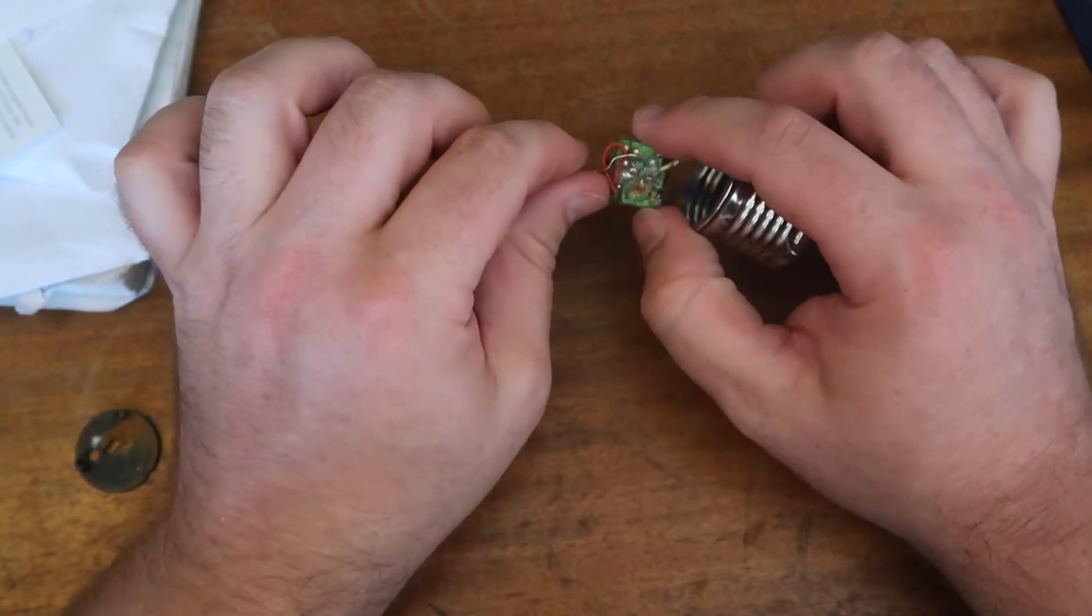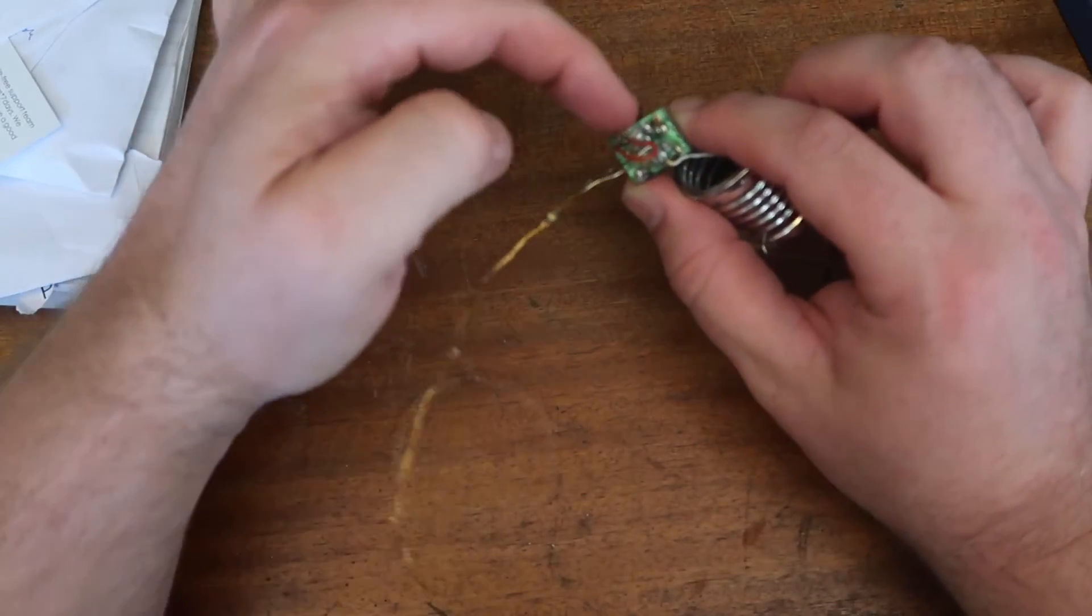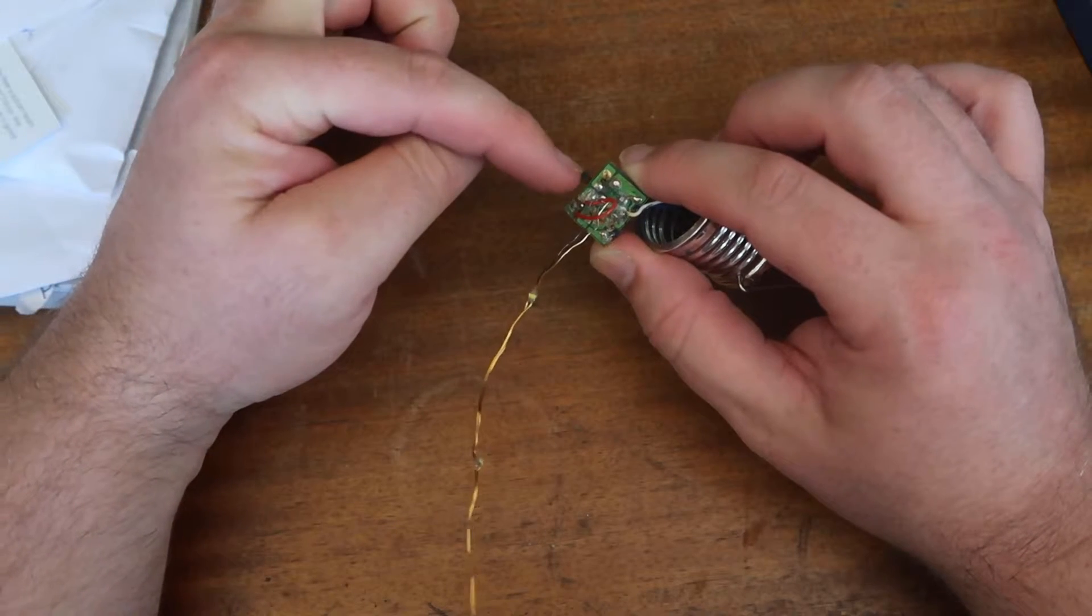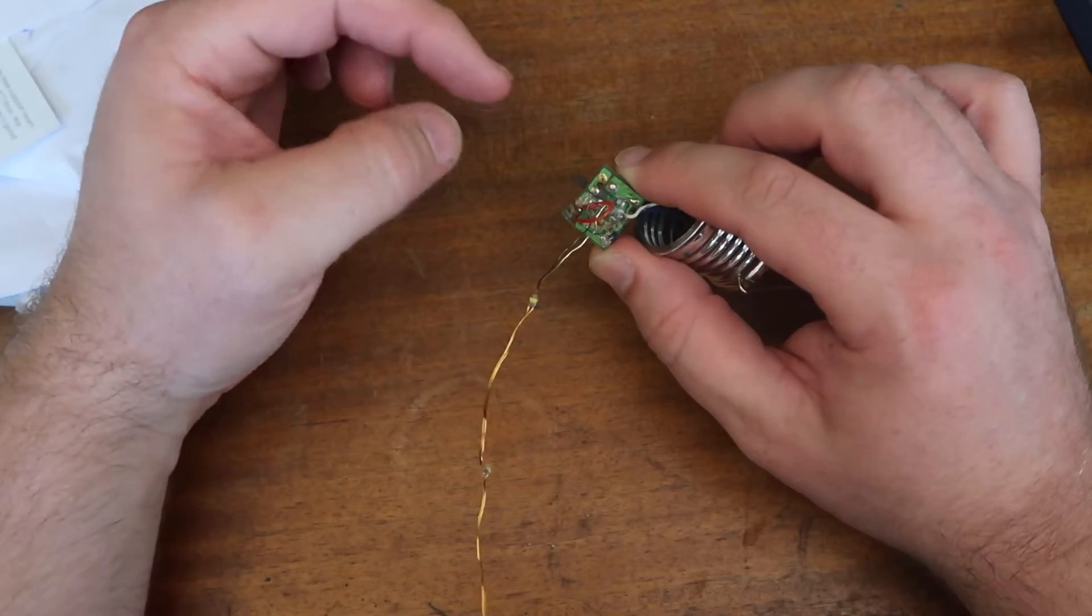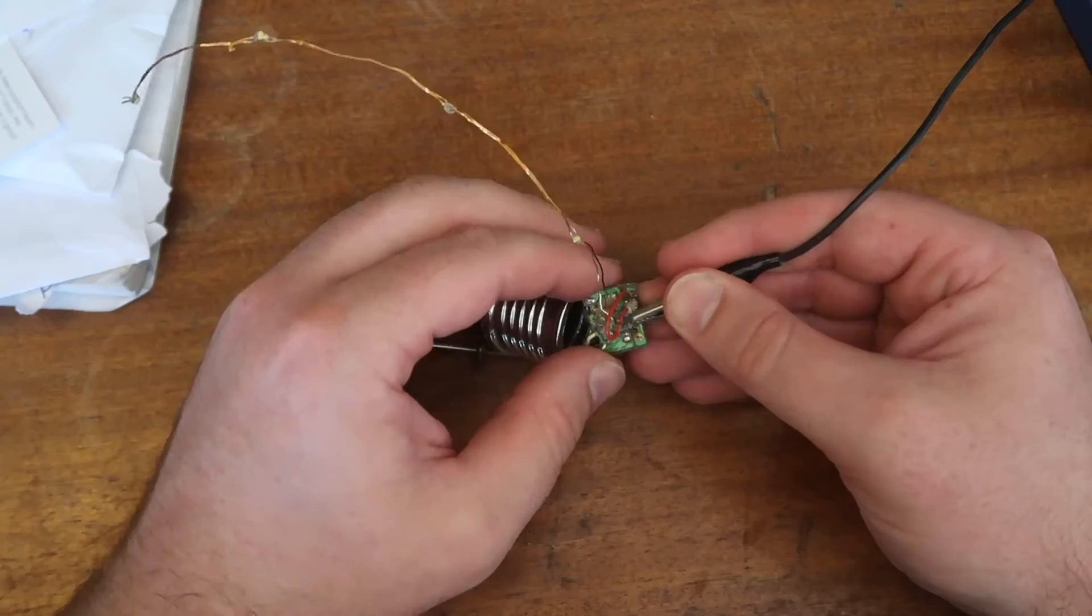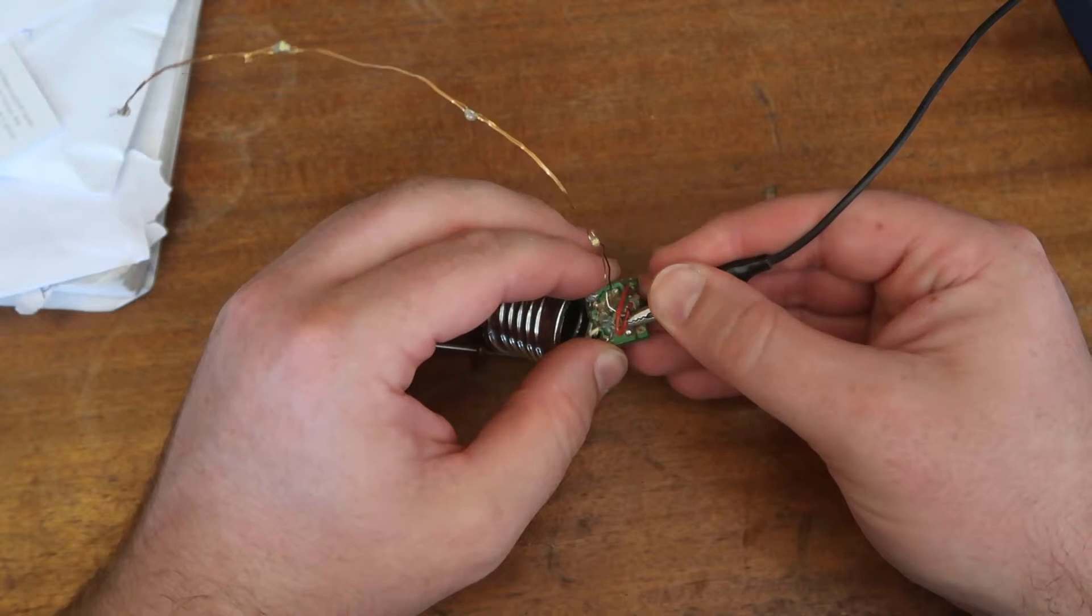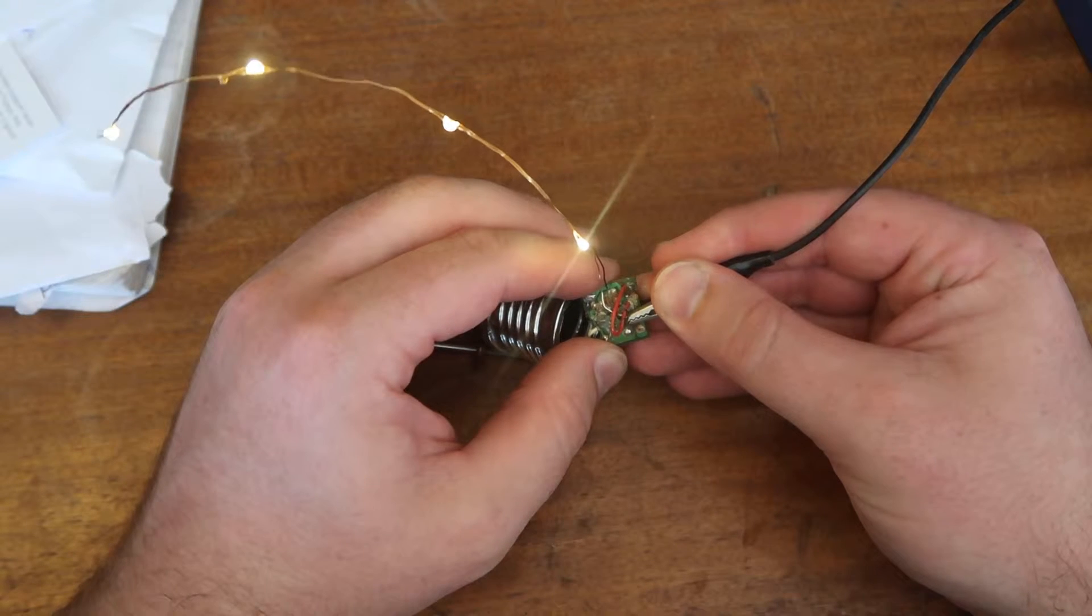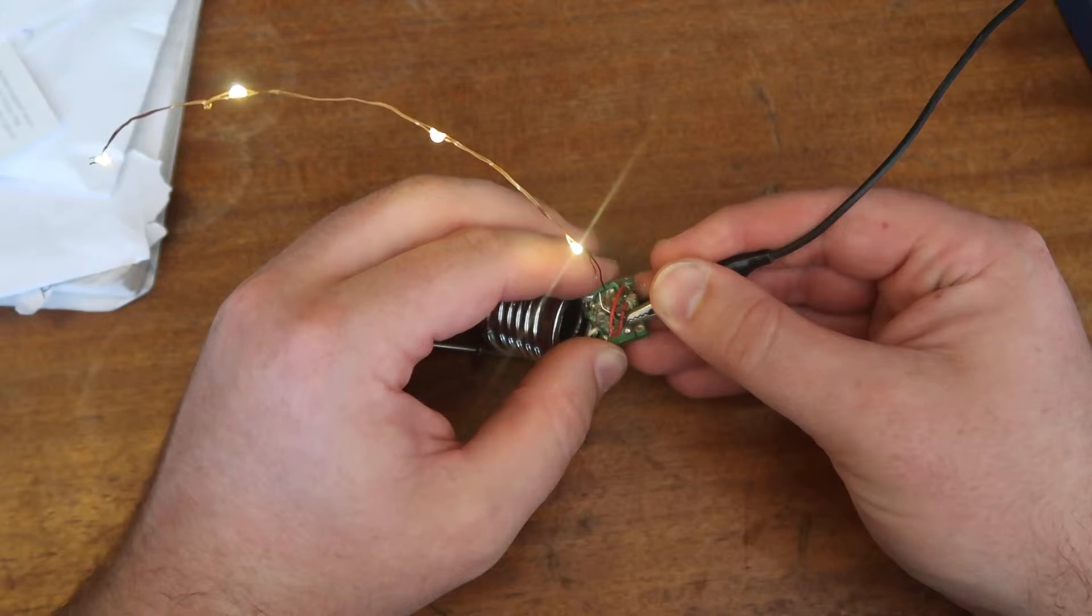So what I am going to do is just solder across where the switch contacts are so that it works. You can see if I bridge out the switch so that it's permanently on, then it lights up.